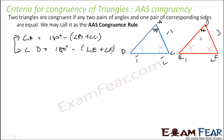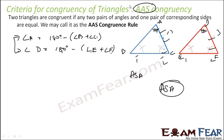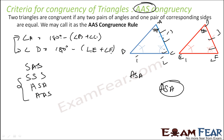Now if this is true, we can apply the ASA rule — angle side angle. We can prove that these triangles are congruent using ASA. So far we have proven that SAS is true, ASA is true, and AAS is true. These are three of the four congruency models; there are more models which we will study later.